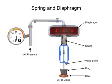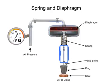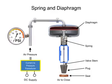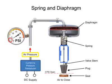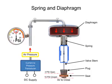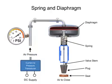With no air pressure, the restrictor is pushed upward by the spring to act as a normally open control valve. To vary the position of the restrictor and flow through the valve, a current to pressure transducer can be used to provide a 3 to 15 psi signal to the diaphragm. At 3 psi the valve is maintained open, and at 15 psi the valve is maintained closed. Pressures between the 3 to 15 psi range proportionally change the flow of the valve.